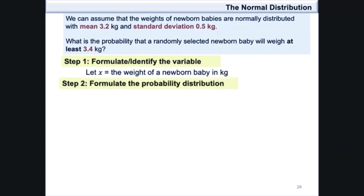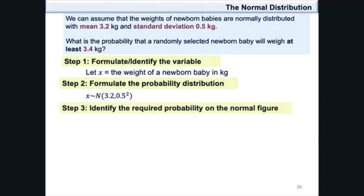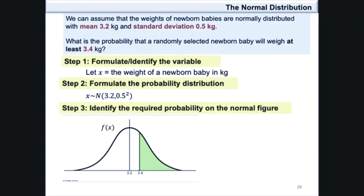Step 2. Formulate the probability distribution. In this case, x will follow a normal distribution with a mean of 3.2 and variance 0.5². Step 3. Identify the required probability on the normal figure. On the normal figure, the central position will be the mean 3.2 and the area of interest is to the right of 3.4.